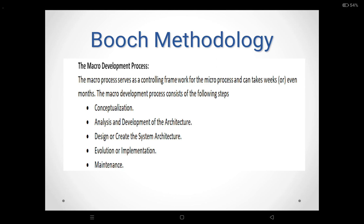The macro development process consists of various steps. The first step is conceptualization. The second phase is analysis and development of architecture. The third one is design, or create the system architecture. The fourth one is evaluation or implementation. The fifth one is maintenance.